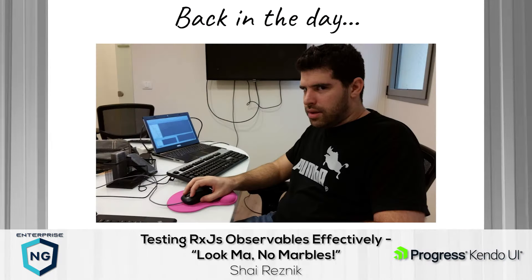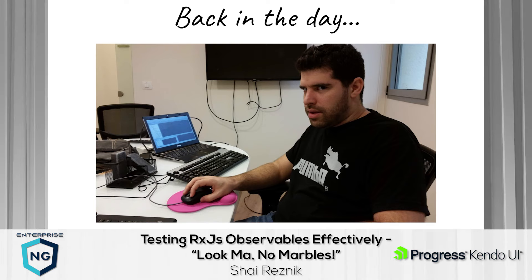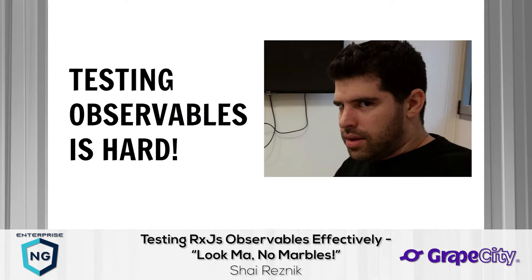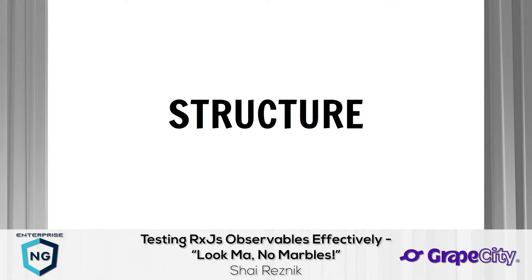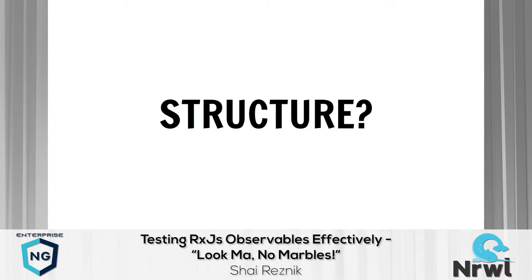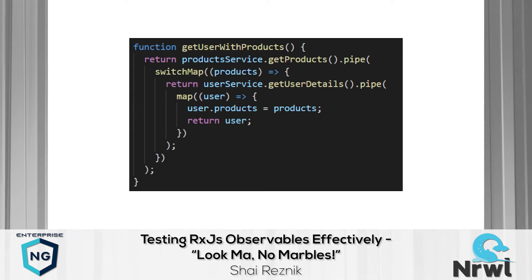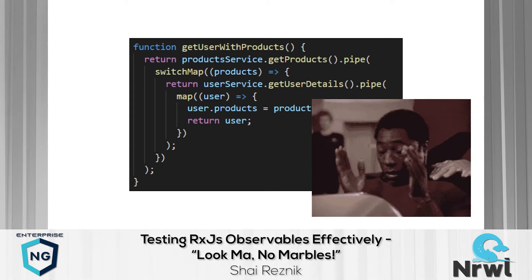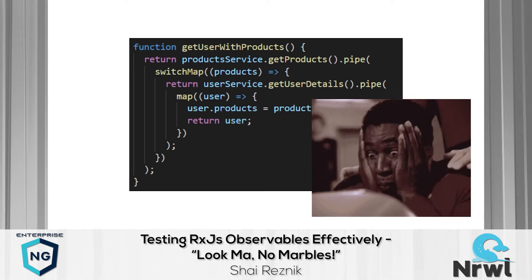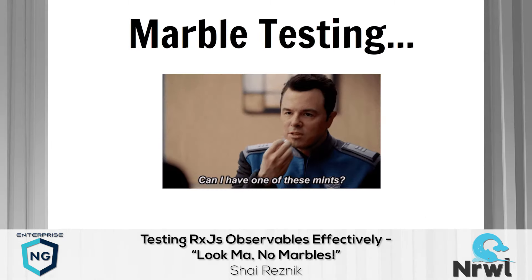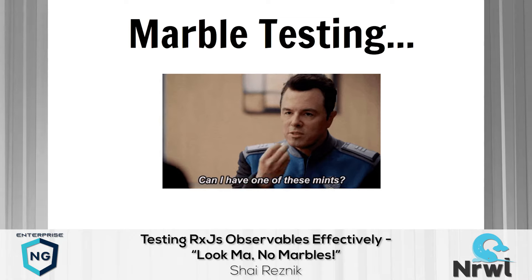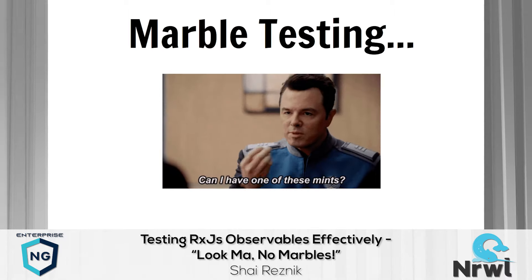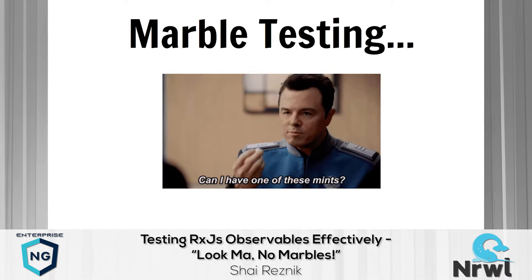I want to show you the most test-effective way I found to test observables. It starts from my background with observables. A few years ago when I started testing my first observables I quickly realized that testing observables is hard. I ran into two main issues. The first was structure — it wasn't obvious when looking at an observable what I needed to test. The second was marble testing.